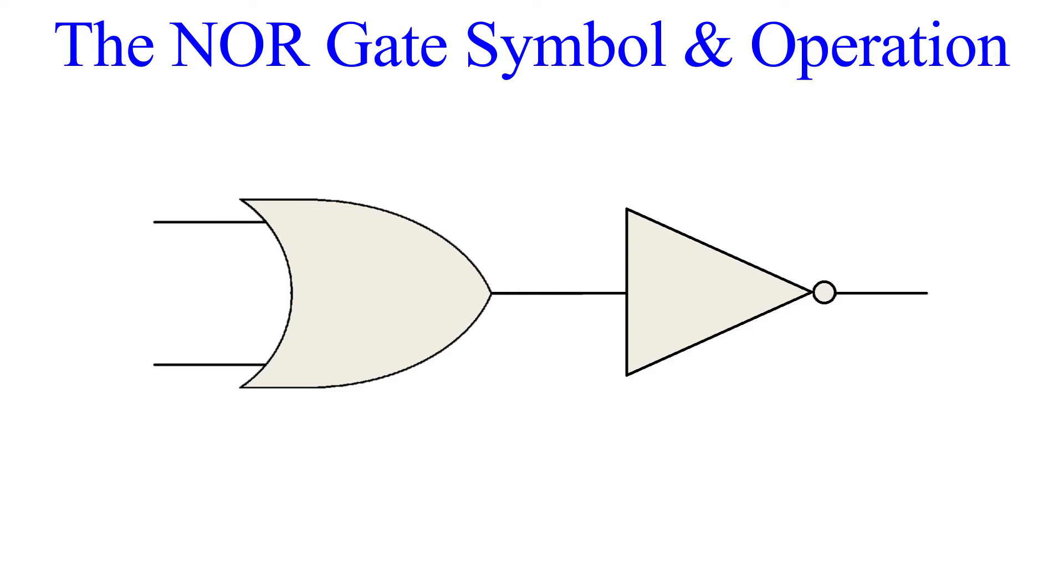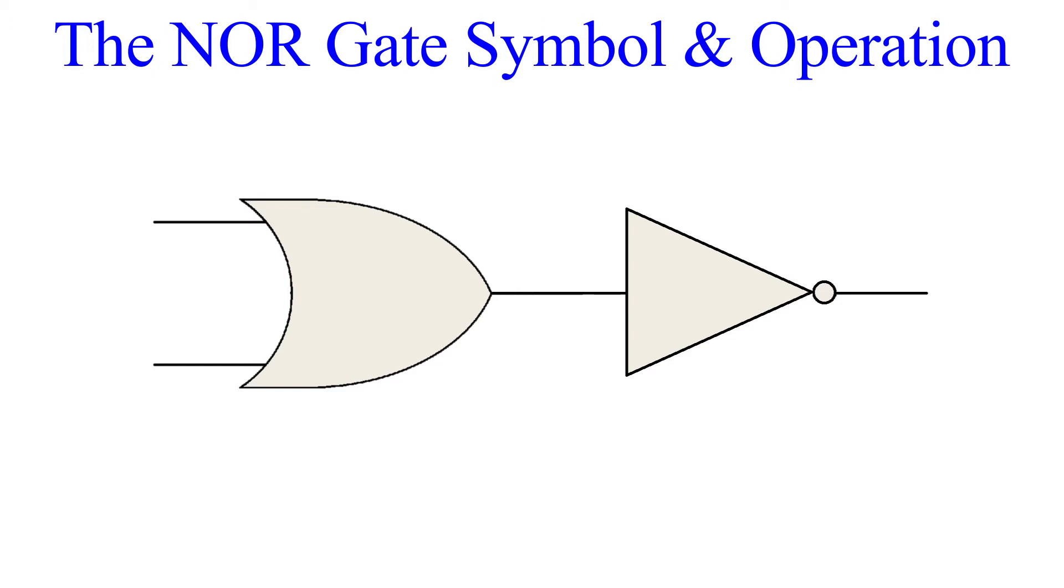So the NOR gate takes the output of the OR gate and inverts it. The logic goes like this: a NOR gate produces a low output when any of its inputs is high. It produces a high output only when all the inputs are low.